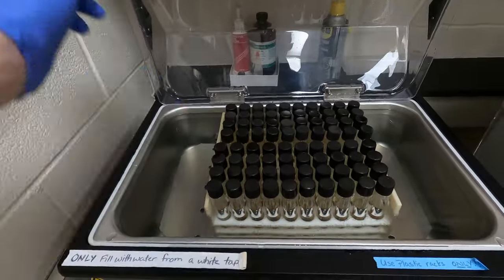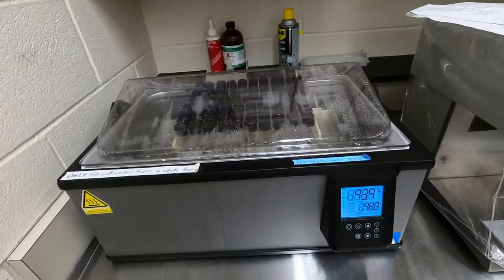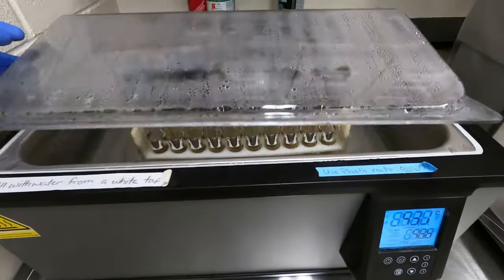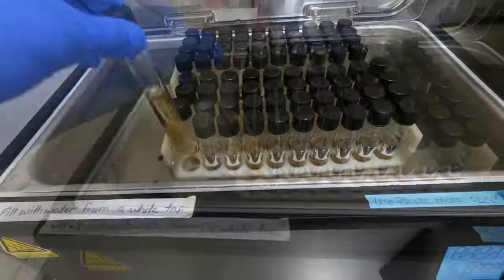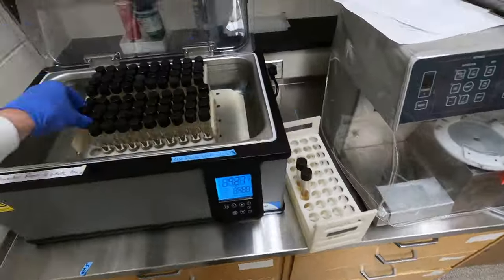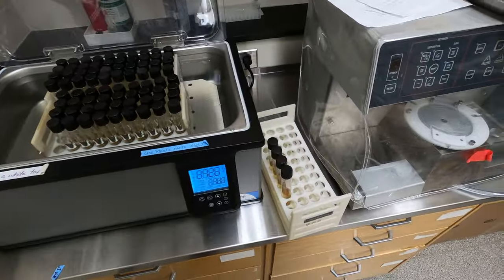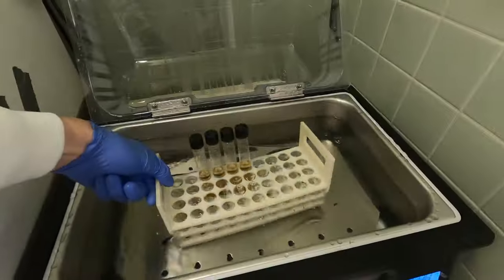We prepare 18 milliliter Mueller-Hinton tubes in advance, and at this stage we melt them in a boiling water bath between 95 and 100 degrees celsius. Once these tubes have melted, we transfer them into a 50 degree water bath so that they can cool to the point where we're able to work with them.